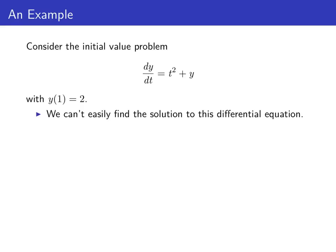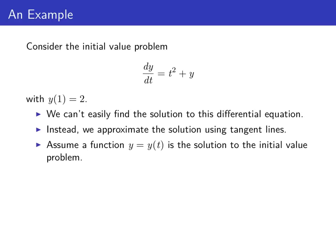Consider the example of the initial value problem dy/dt = t² + y, with the initial condition that y(1) = 2. We can't easily find the solution to this differential equation, so instead we're going to approximate the solution by using local linearity, or tangent lines. Let's assume that we have a function y, which is a function of t, that's the solution to this initial value problem.